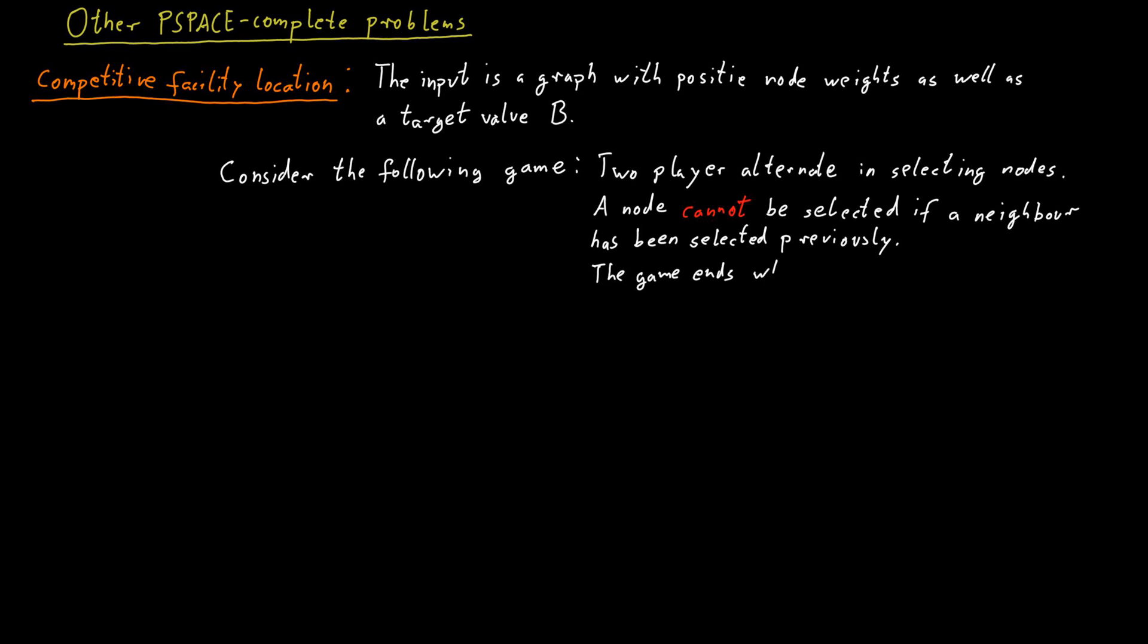So the game ends when no more nodes can be selected. And the question is whether the first player can prevent the second player from getting a profit of at least B, where a profit a player gets is simply the sum of all the node weights of the nodes that that player has selected.